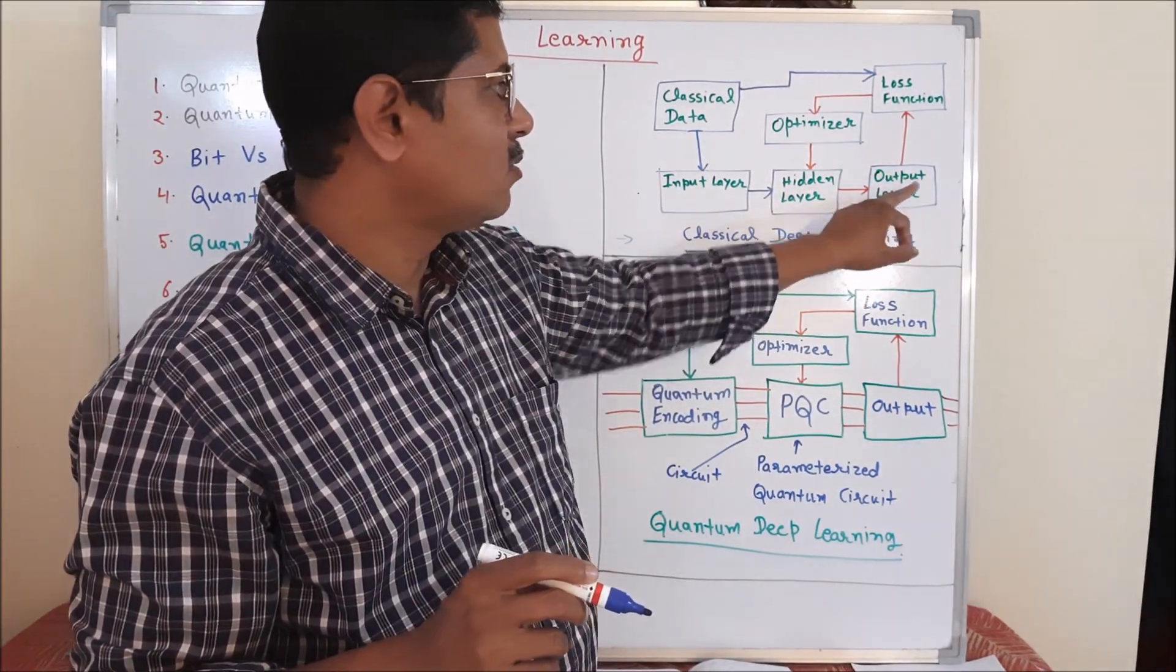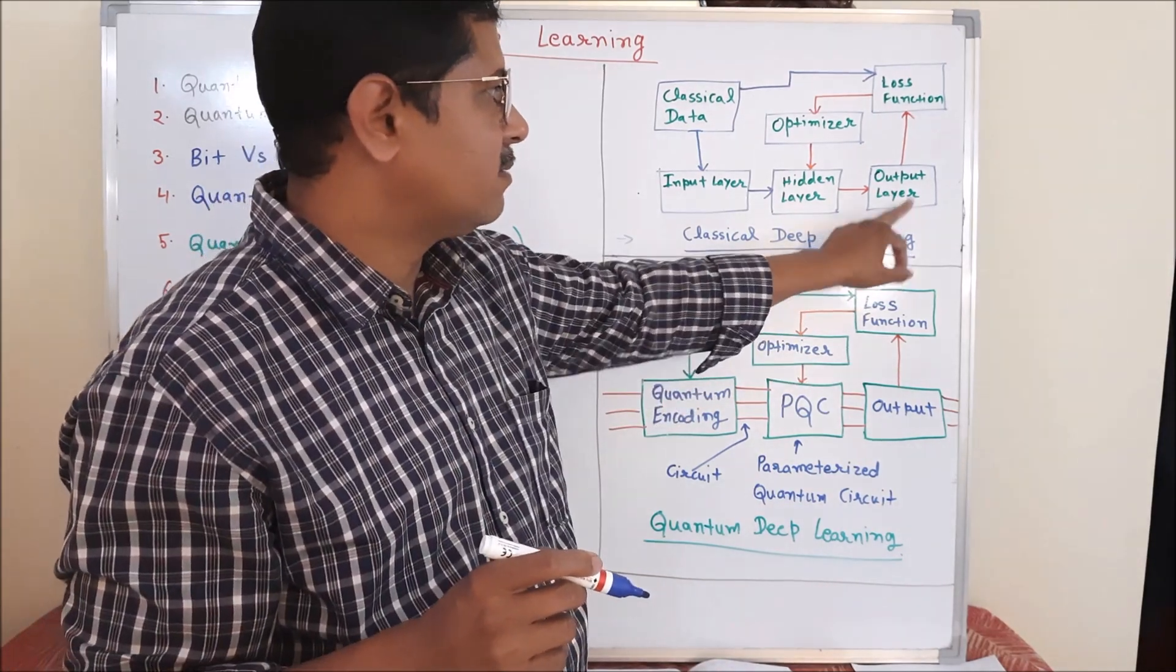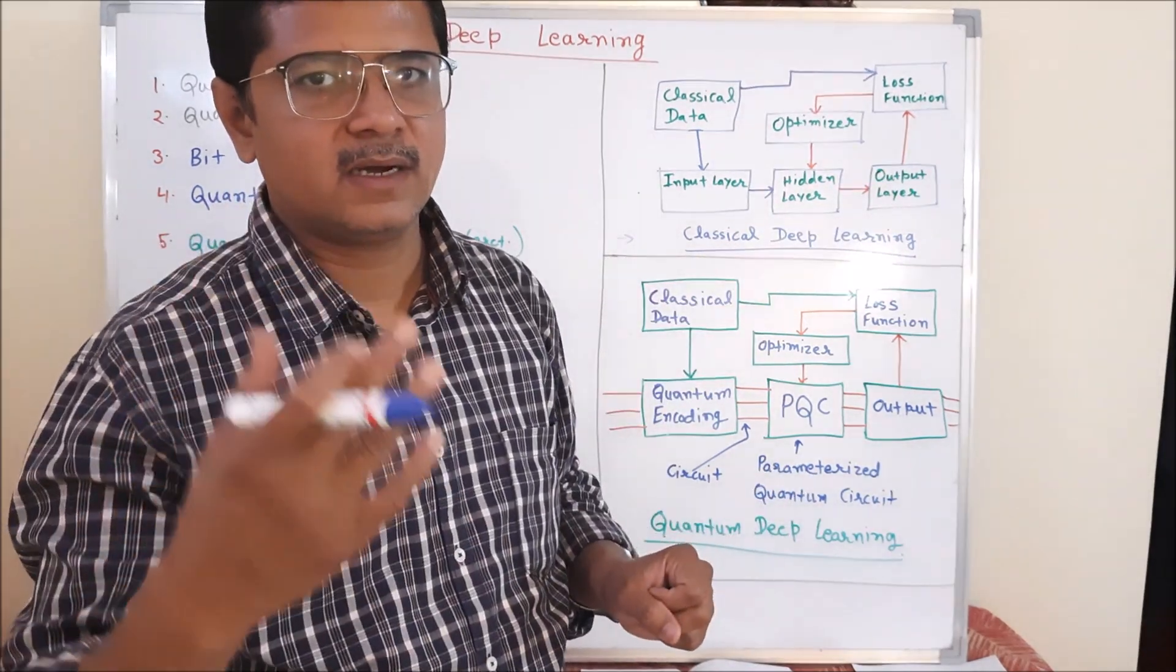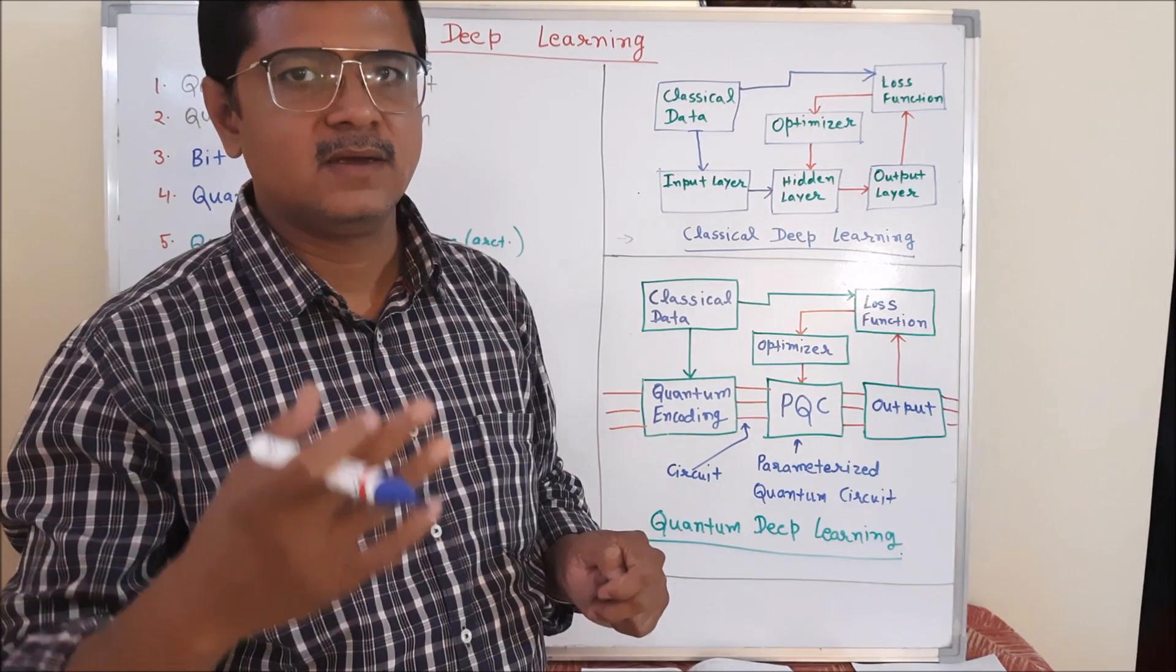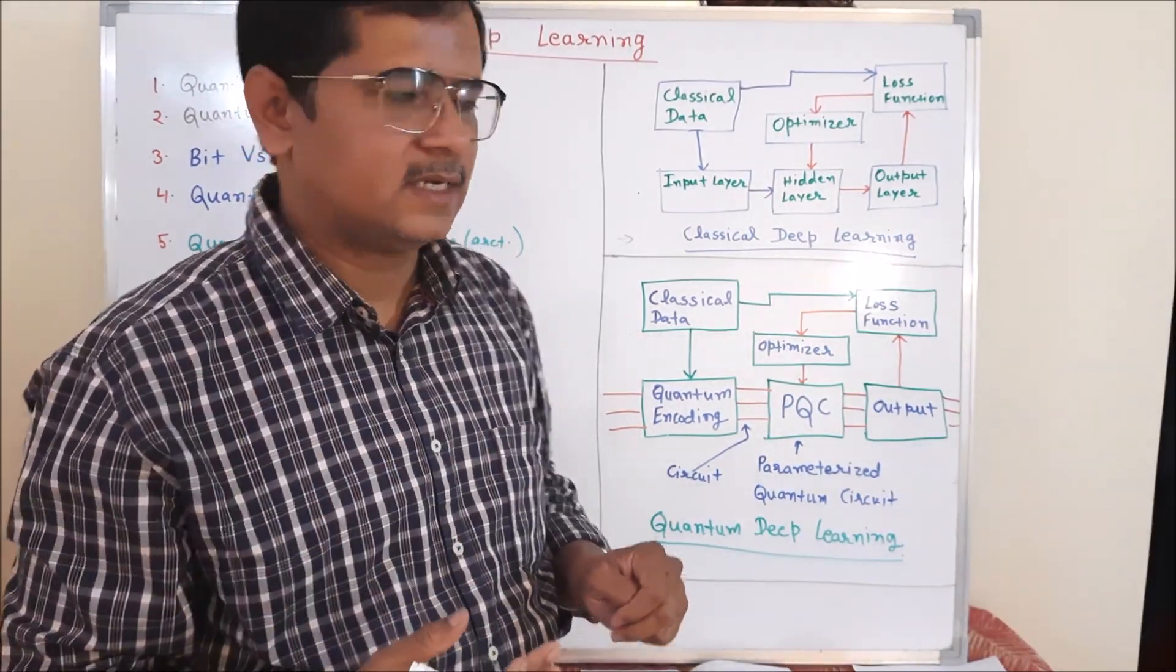Then next is the output layer. Output layer is our prediction layer, where we predict the classifiers, classes, the regression value, the sequences, etc.